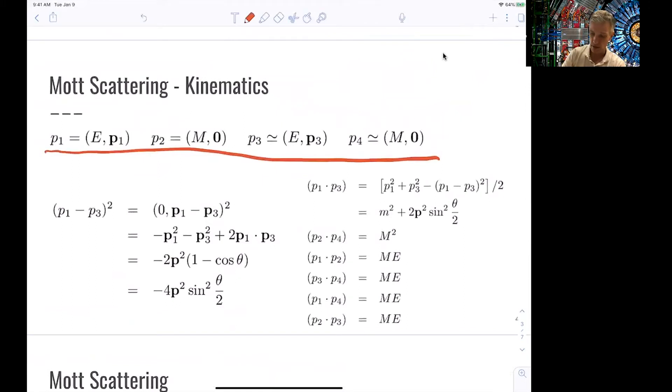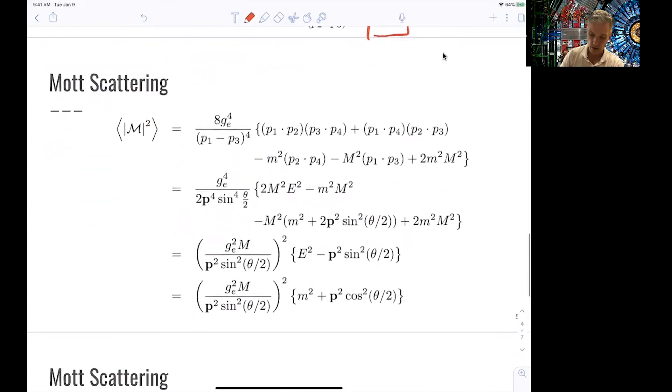You find that many of the factors are simplifying to Me. So p2 times p3 is Me, and so are many of the others. And there's a few important factors. For example, p1 minus p3 squared is minus 4p squared sine squared theta half. And similarly, p1 times p3.